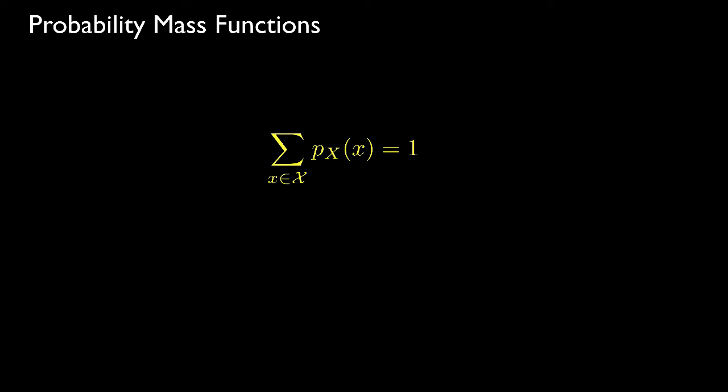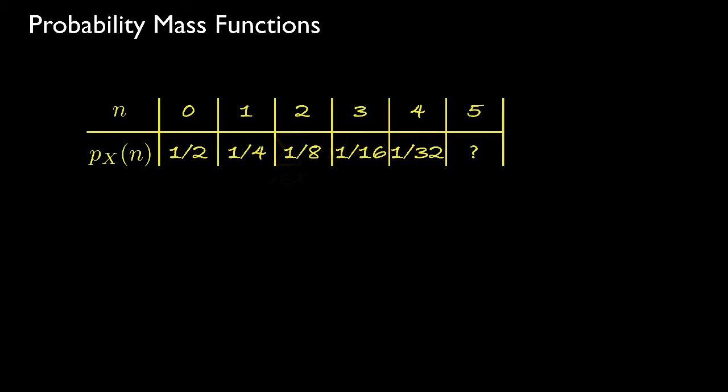One of the most important properties of a discrete random variable's probability mass function is that the sum of all its values over the range is equal to 1. This means the probability that the random variable takes one of the values in its range is equal to 1. For example, if a random variable has range 0 through 5 and the other values sum to 31 over 32, then the probability mass function at n equals 5 must equal 1 over 32.